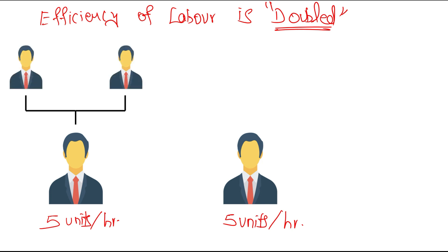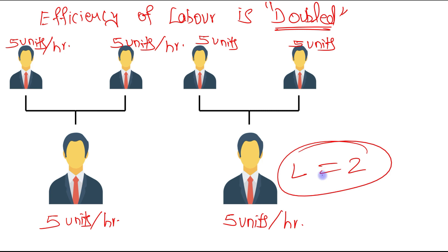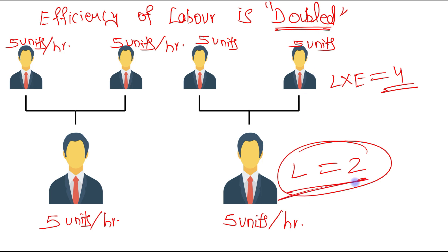If the efficiency of labor is doubled, then each worker will be as productive as two workers — each still produces five units per hour, but effectively behaves like two workers. The actual number of workers remains two, but the number of effective workers L times E has been doubled to four, because each worker is as productive as two workers.